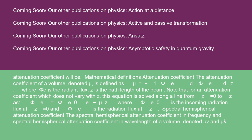Mathematical definitions: the attenuation coefficient of a volume, denoted μ, is defined as μ = −(1/φ_E)(dφ_E/dz), where φ_E is the radiant flux and z is the path length of the beam. Note that for an attenuation coefficient which does not vary with z, this equation is solved along a line from z = 0 to z as φ_E = φ_E0 · e^(−μz), where φ_E0 is the incoming radiation flux at z = 0 and φ_E is the radiation flux at z.